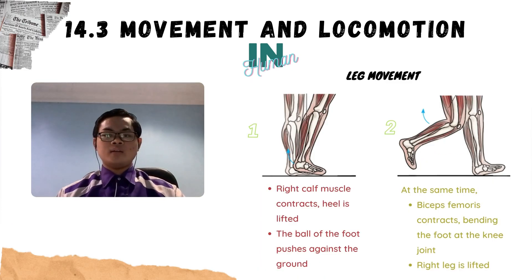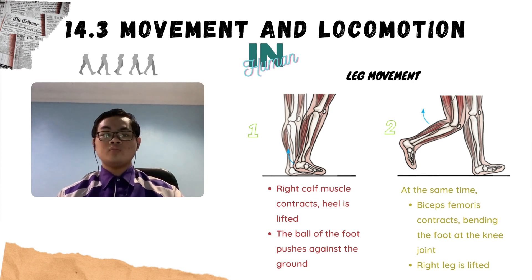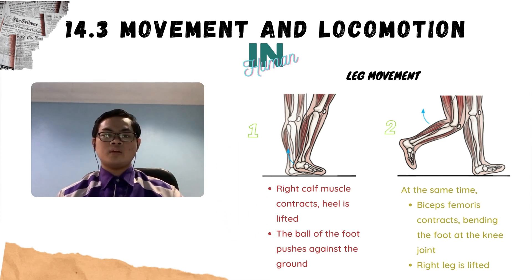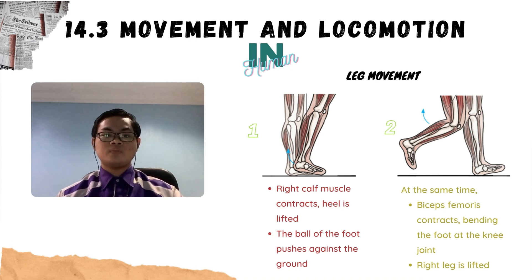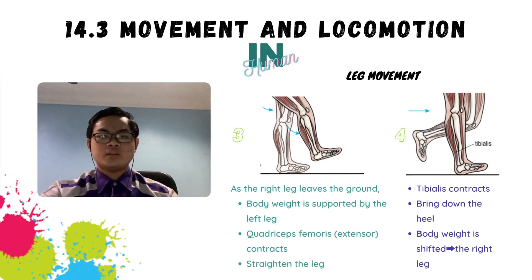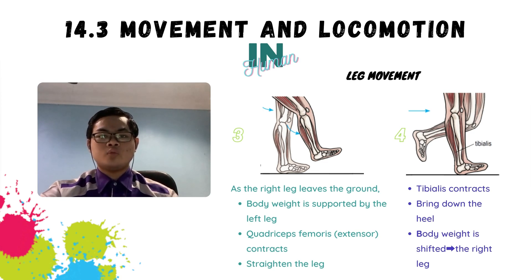Now let's talk about leg movement. According to the textbook, leg movement begins when the right calf muscle contracts, lifting the heel. The ball of the foot pushes against the ground. At the same time, the biceps femoris contracts, bending the foot at the knee joint. This action causes the right leg to be lifted. As the right leg lifts, the body weight is now supported by the left leg, which is still on the ground.